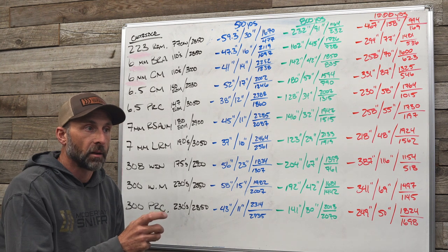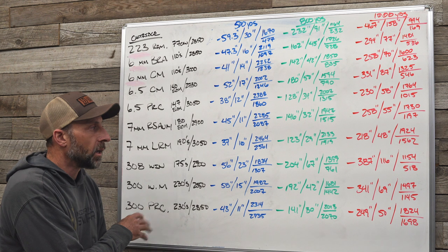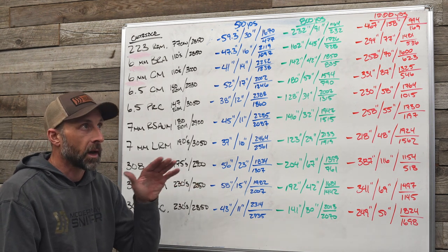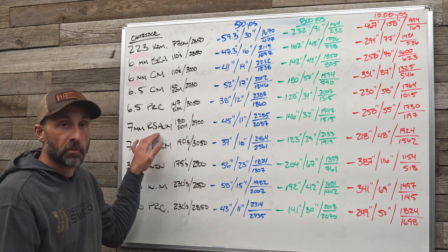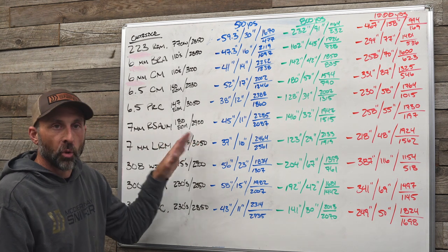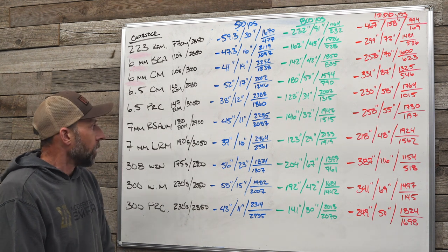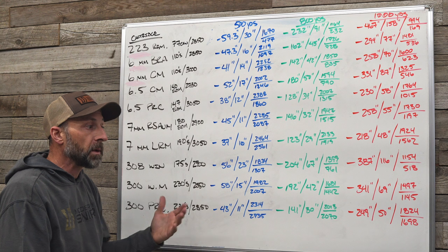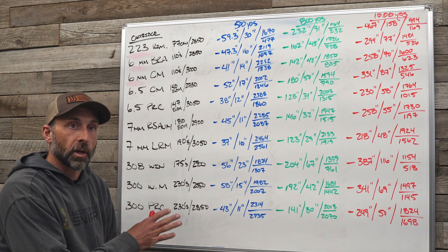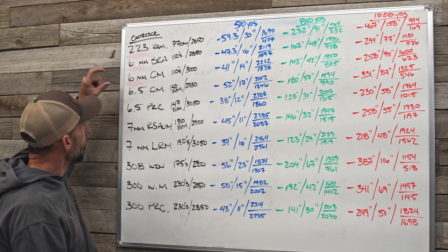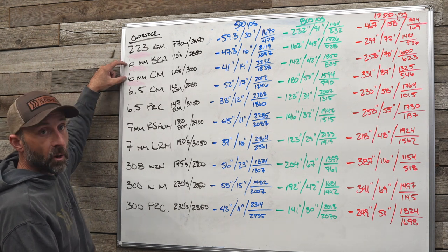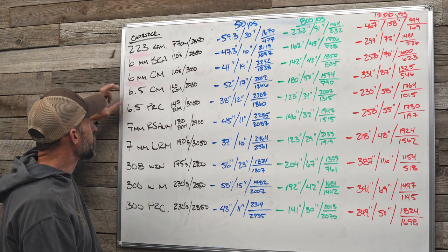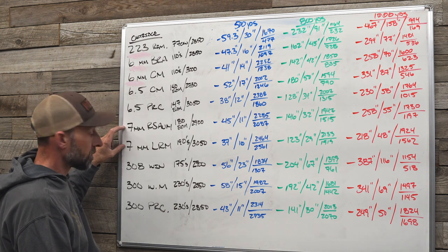Looking at these velocities first, this is where you can start identifying what a reasonable velocity to expect is for a particular cartridge with a particular bullet weight. Just get on the internet, ask trusted sources, and figure out — for example — that you can get that 180-grain ELDM out of a short-action 7mm RSAUM at about 2,900 fps. The .223 is on here because it's a cartridge everybody shoots and a lot of people have been asking if they should bring one to a wind class.